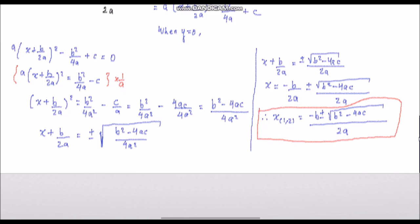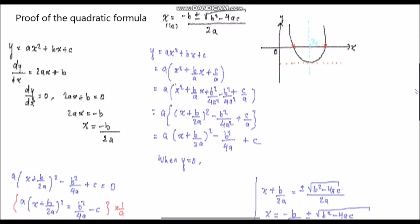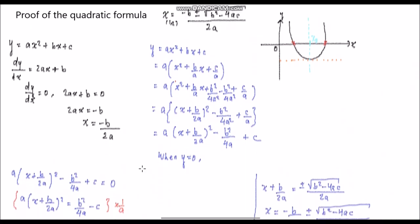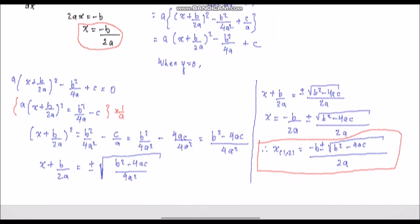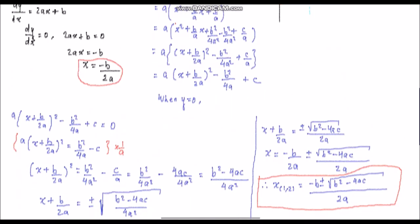So in this video, let us recap. We have proven the formula for x-peak, the line of symmetry, which is x = −b / 2a. So this video isn't just the proof of the quadratic formula — it's also proof for x-peak, which is −b / 2a. We've proven the line of symmetry of a quadratic equation and the quadratic formula.